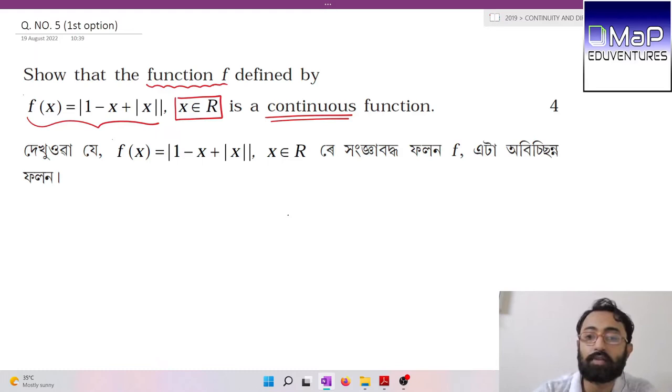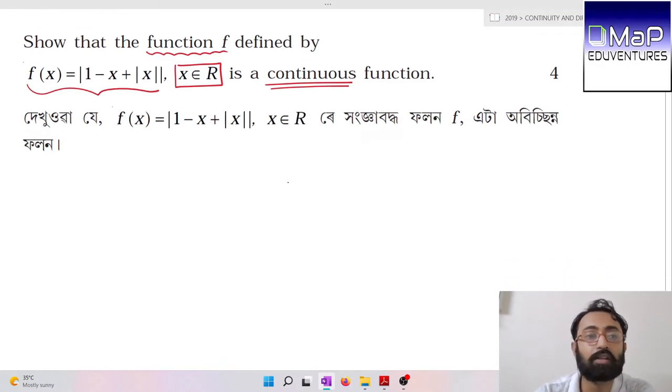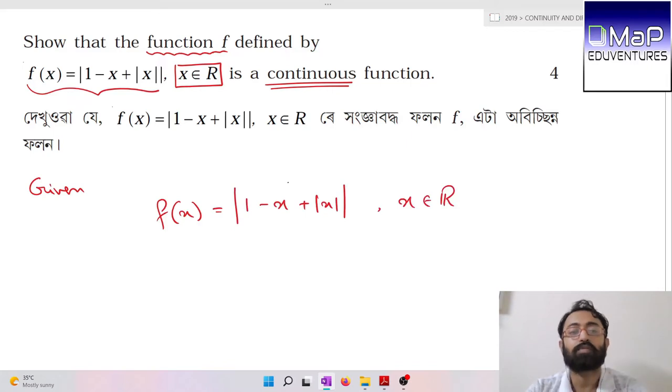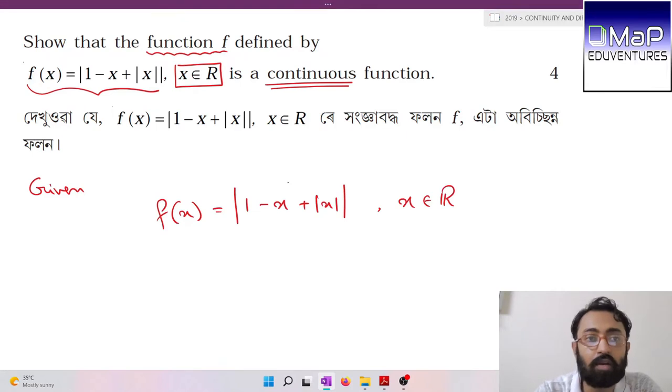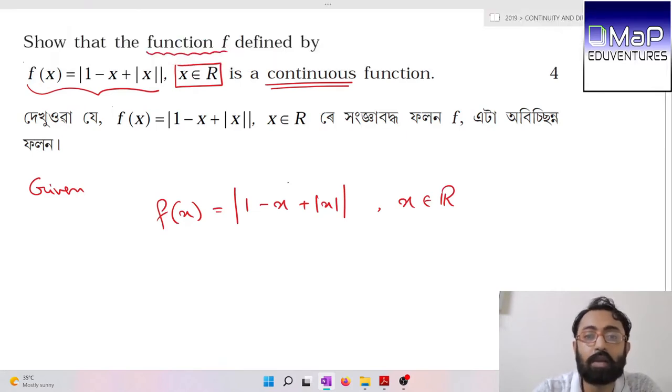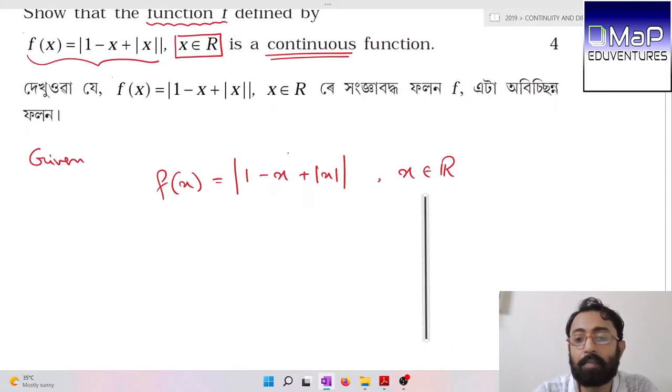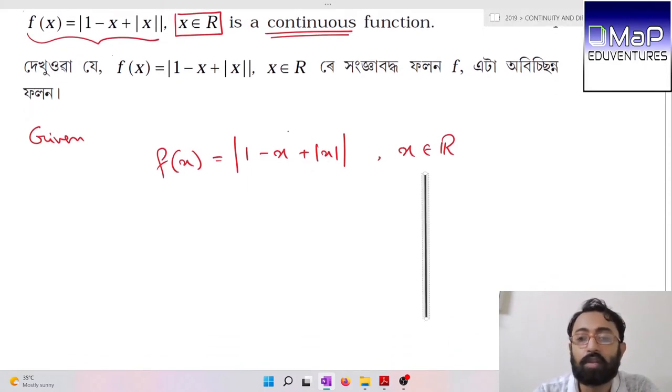We have a modulus function with an expression inside. When we have a modulus function with an expression, we can use a property: if f is continuous, then |f| is also continuous.